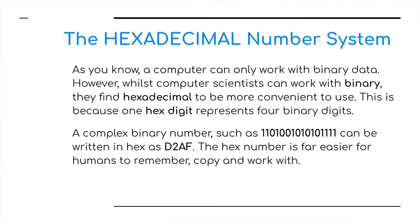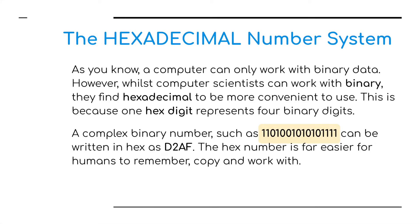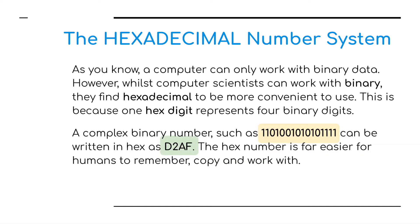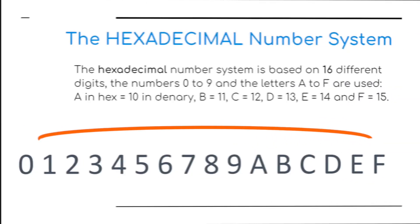As you know from the previous chapter, a computer can only work with binary digits. The digits represent the transistors on the CPU and whether they're in an on or an off state. Computer scientists can work with binary, but they find hexadecimal a more convenient thing to use. This is because one hex digit represents four binary digits, so something really long like 16 bits can be represented as just four digits — in this case D2AF. It's easier for a person to remember.